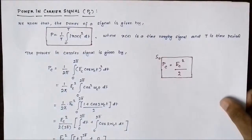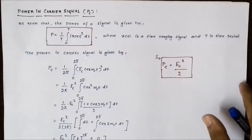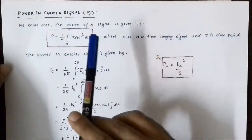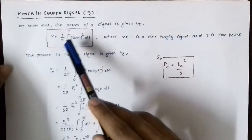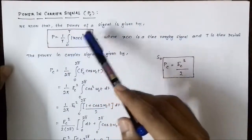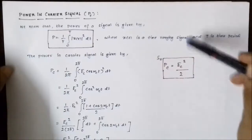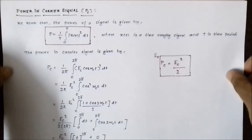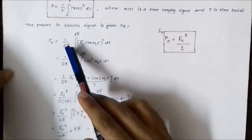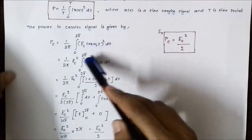First, we calculate the power contained in the carrier signal, Pc. We know that the power of a time-varying signal x(t) is given by P = (1/T)·∫₀ᵀ |x(t)|² dt, where T is the time period of the signal. So the power in the carrier signal is given by Pc = (1/2π)·∫₀²π [Ec·cos(ωc·t)]² dt.